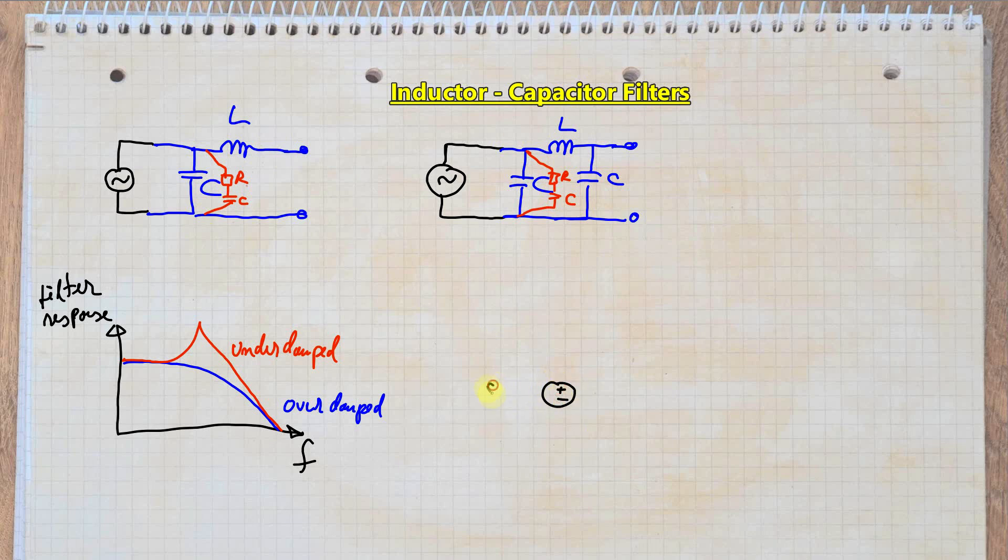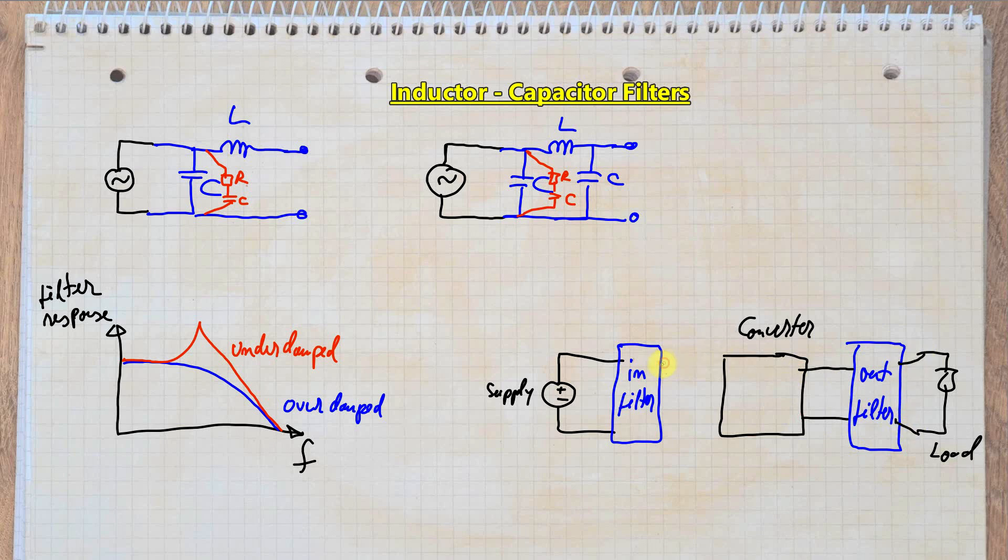The second important consideration with filters has to do with the impedance that they present in relation to the power supply and the load. When considering the input side filter, it's important to have the filter's output impedance smaller than the supply's impedance. Not respecting this can lead to an unstable operation. And then, on the output, the filter's impedance can again create problems by generating voltage dips during load transients. Here, again, you want the filter's output impedance to be smaller than the load impedance.